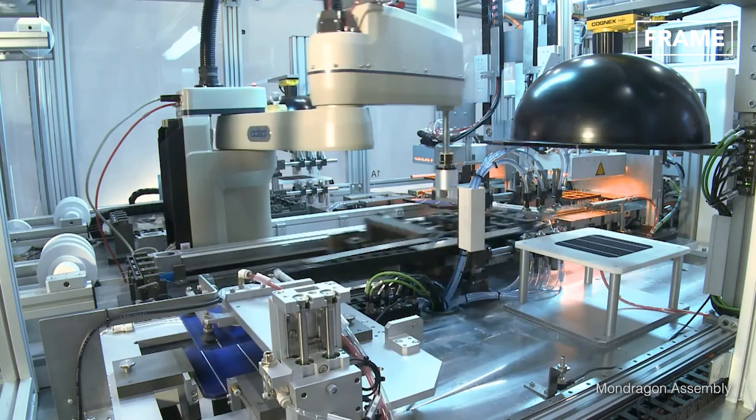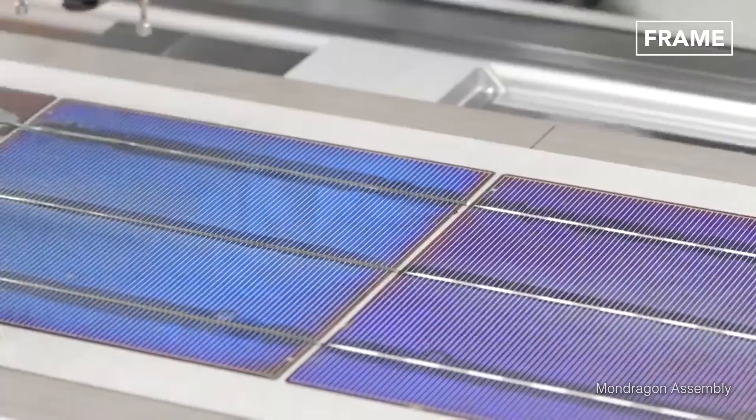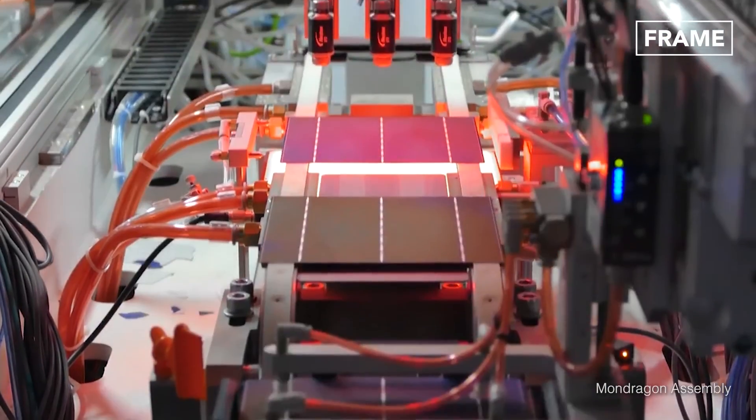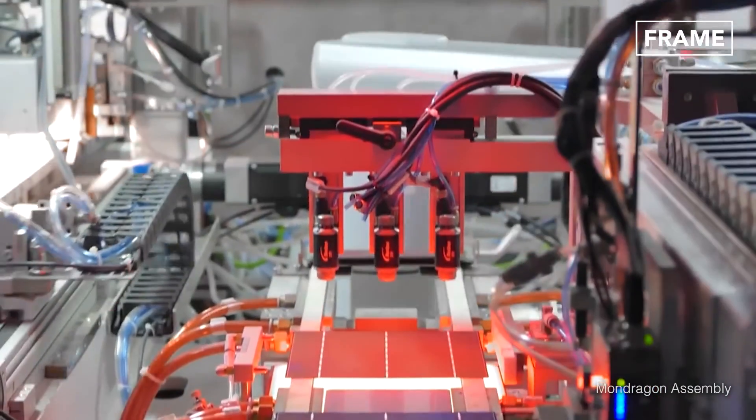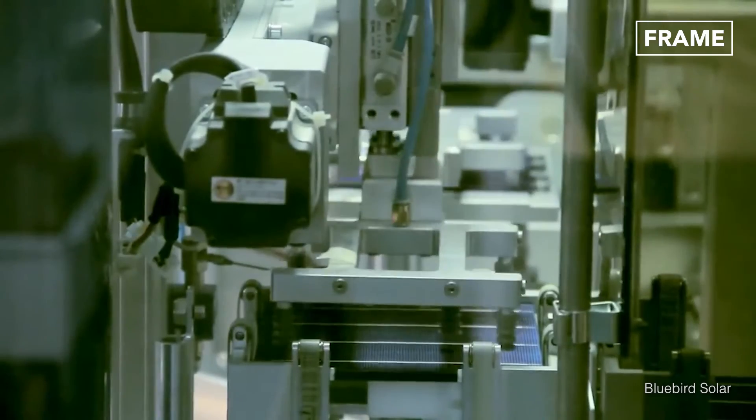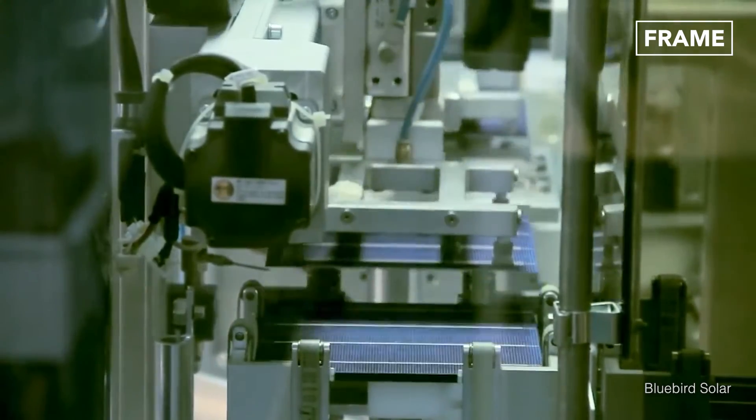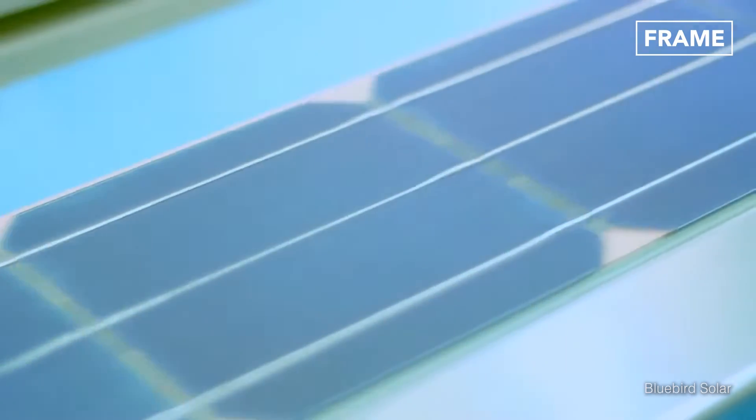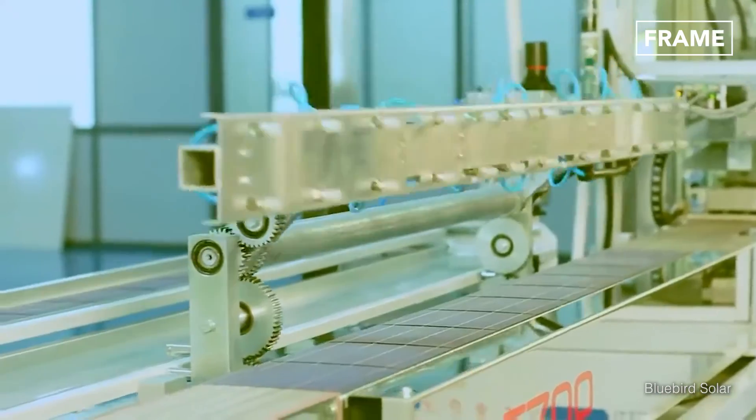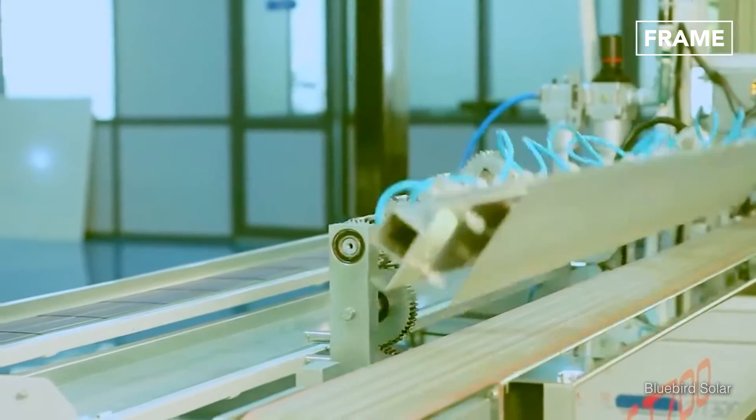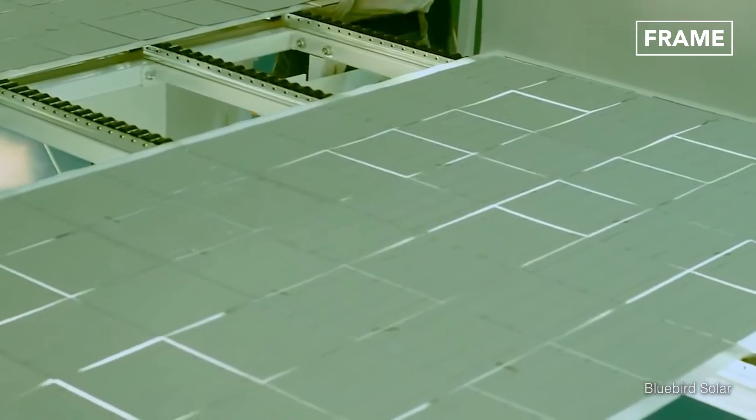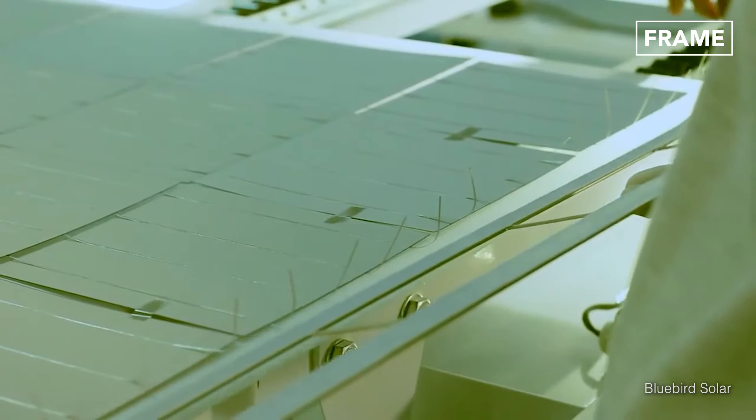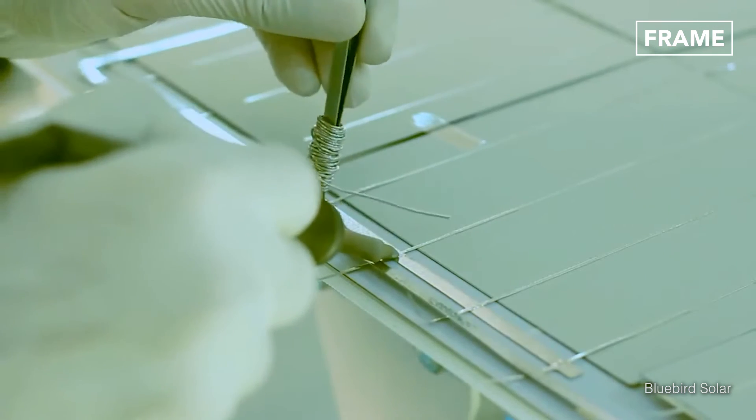This pure silicone is then crystallized and sliced into rectangular or hexagonal wafers called cells, before adding phosphorous ions. The cells are then connected to each other using electrical contacts and thin strips of tin-coated copper.